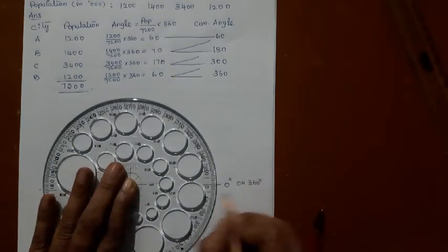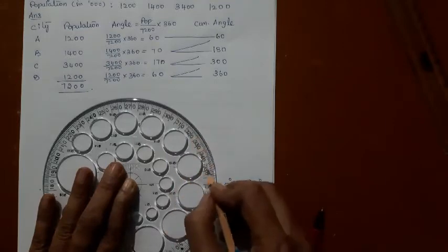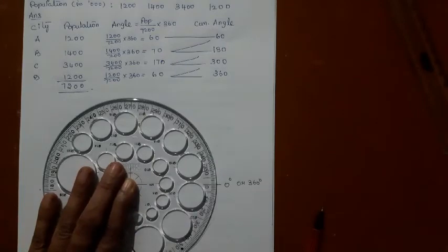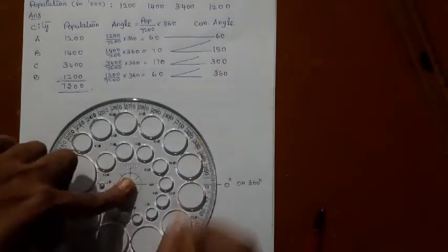Then the next cumulative angle is 60 degrees. Plot and also write. Then 130 degrees.